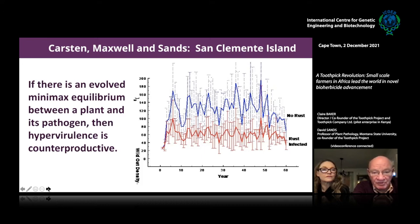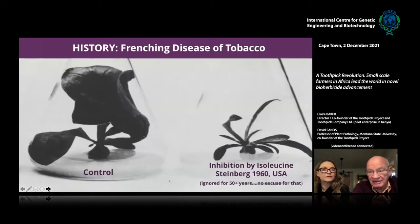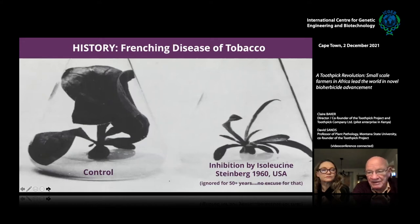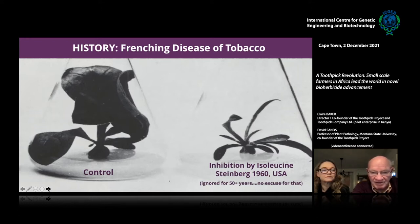That's why most plant pathologists have failed — they assume that if they find a pathogen it'll work. Fortunately, Steinberg in the 1960s found that a simple amino acid, like the ones you need in your diet, can also inhibit plants. Nobody knew why, and this was basically ignored for 50 years. There's no excuse for that — we scientists should be reading more.